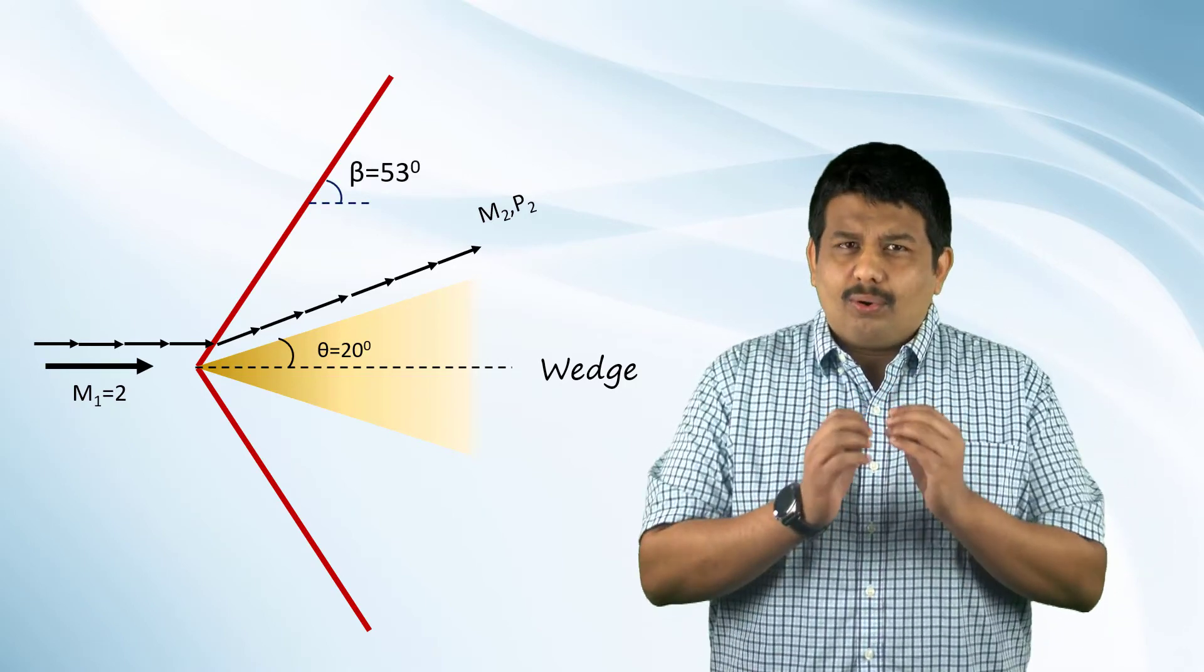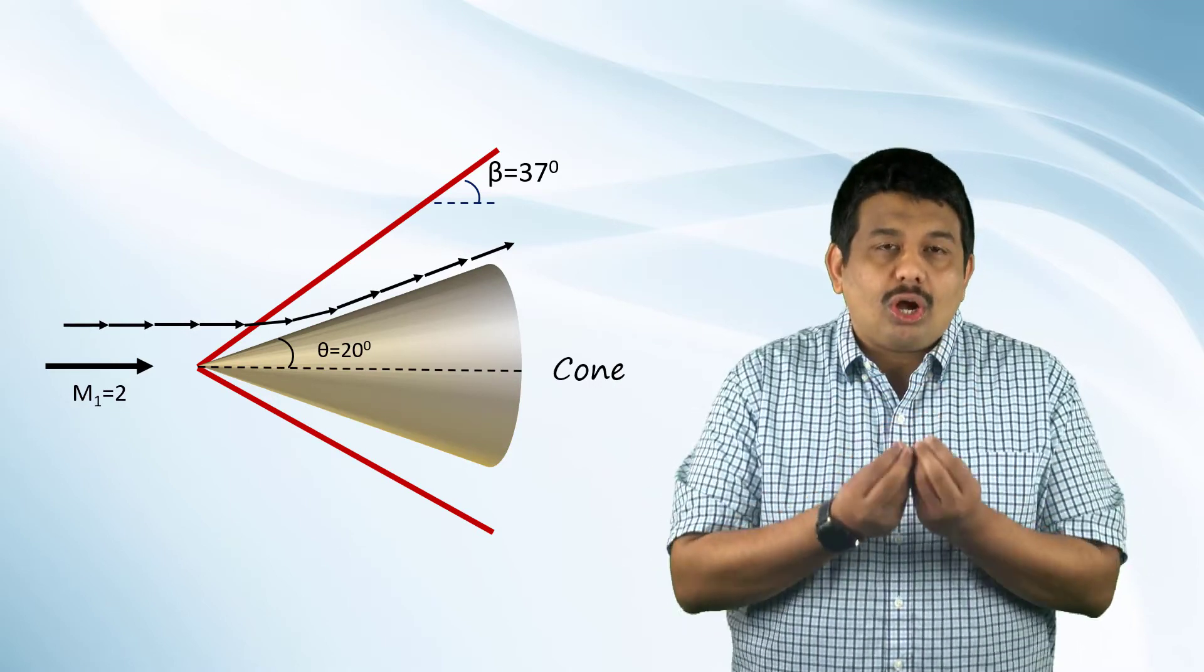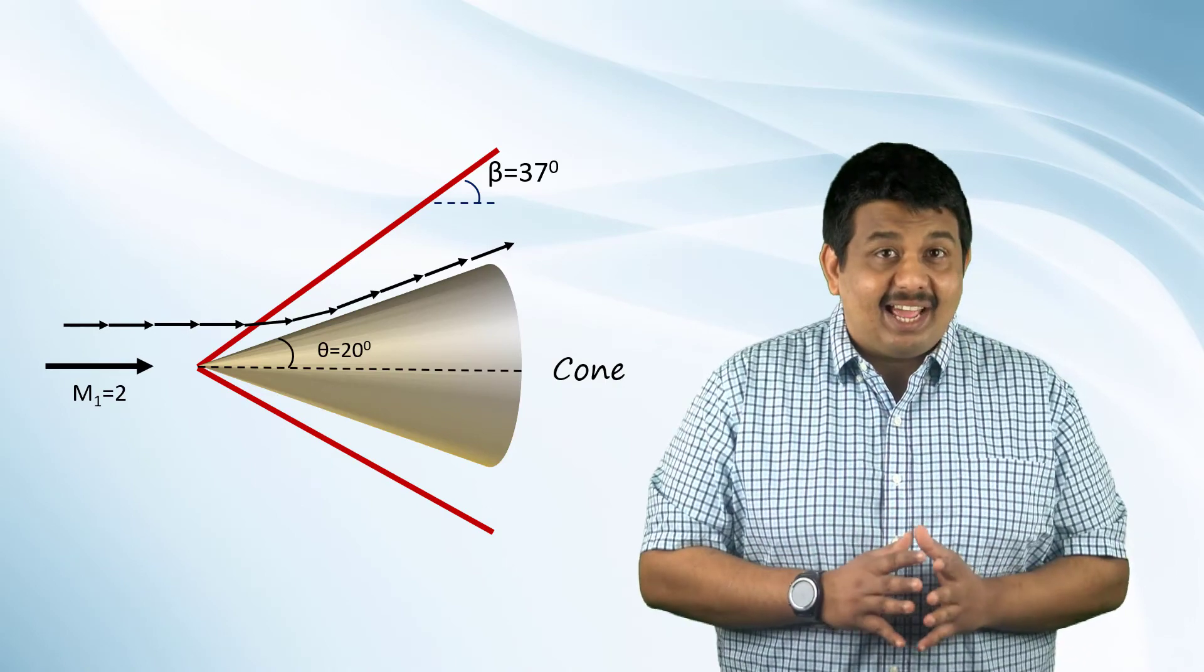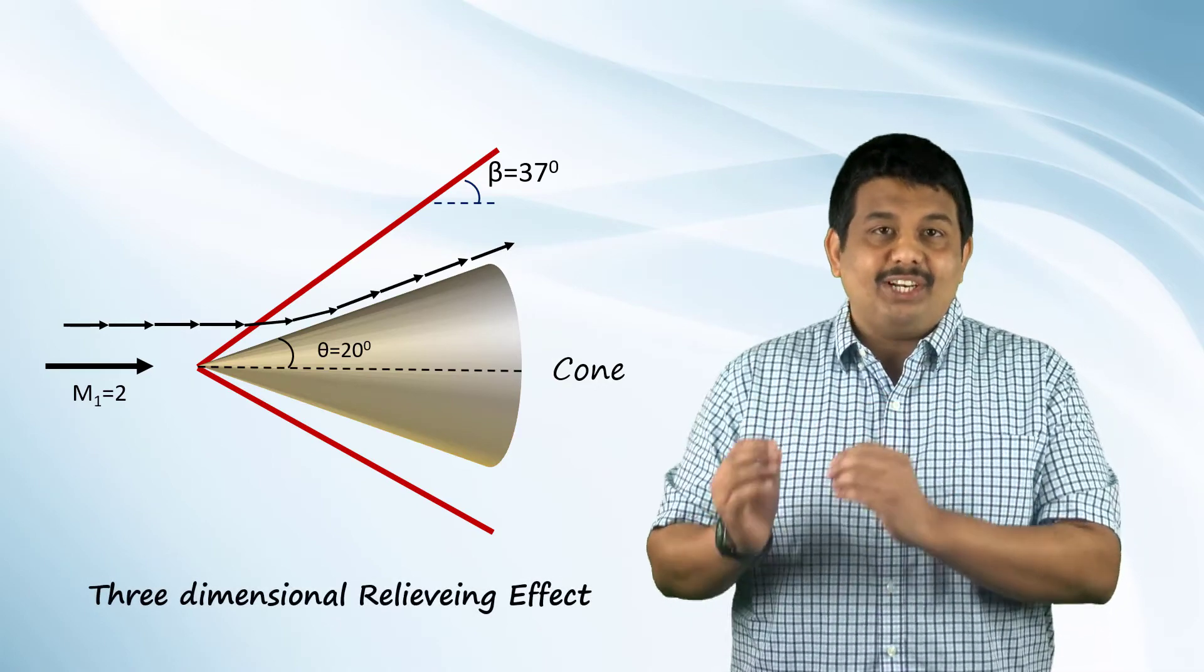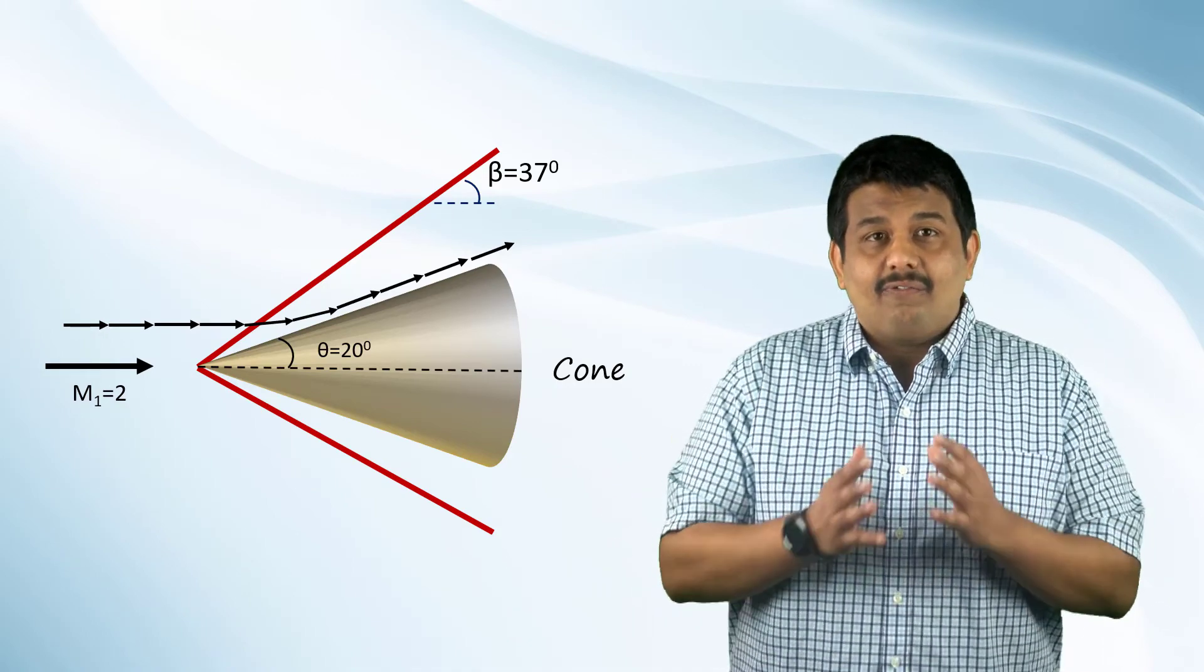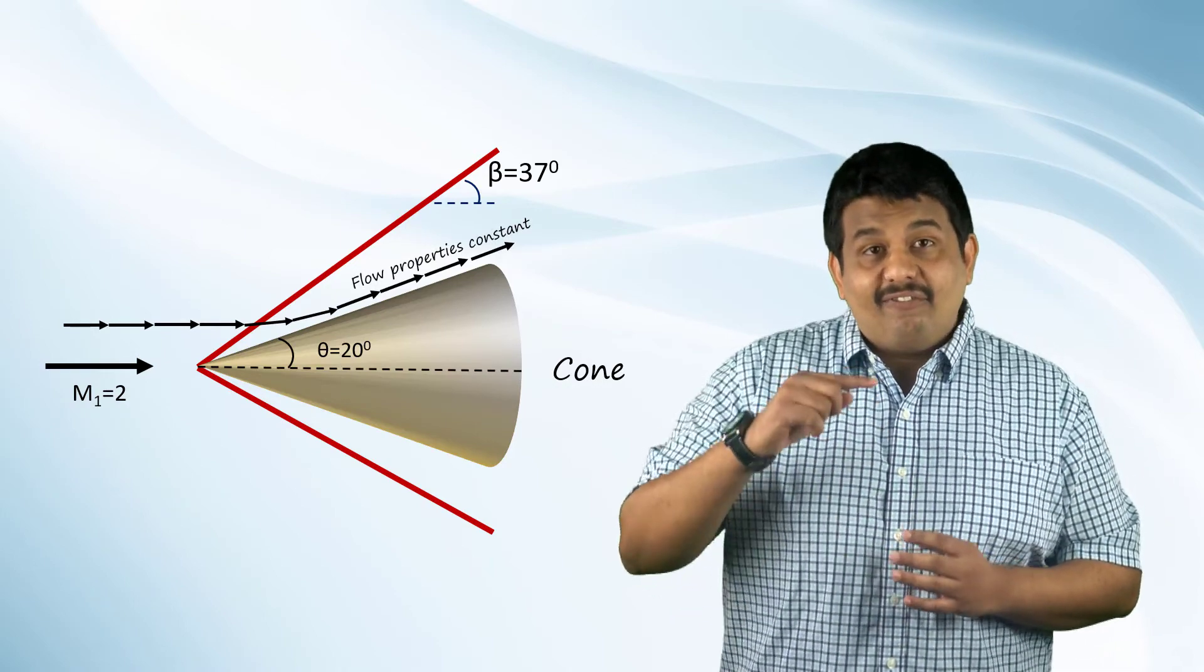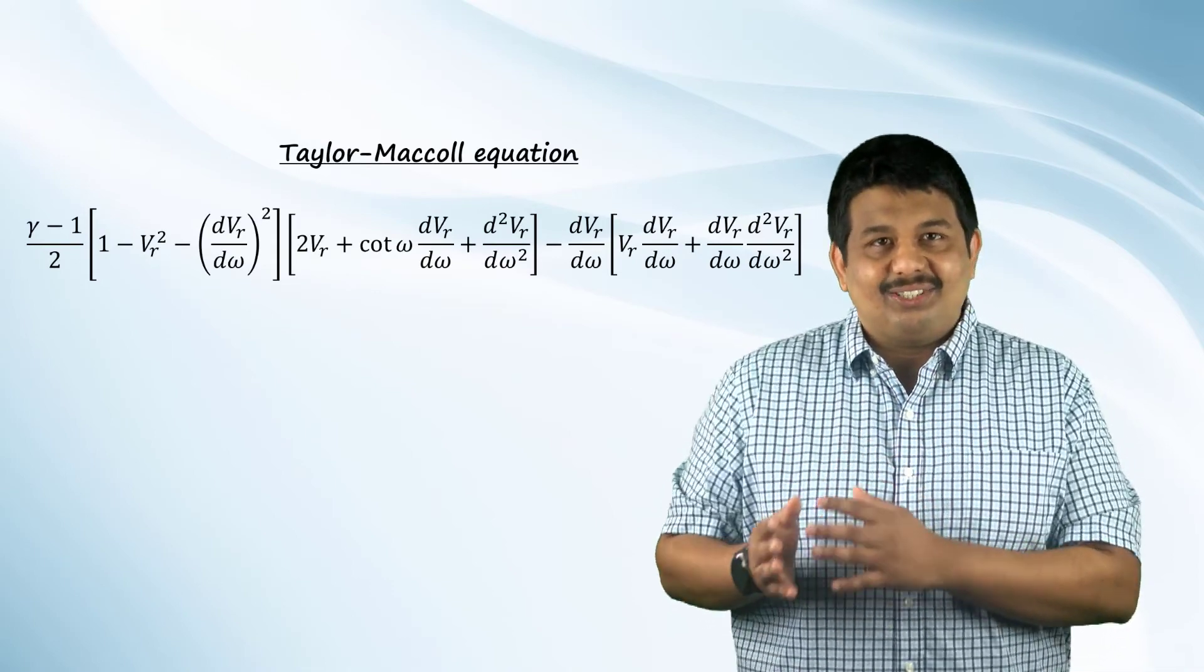Furthermore, for the same flow conditions and the deflection angle, the shock angle for a cone is lesser than that of the wedge, i.e., the shock is weaker for the cone. This is because the flow is 3-dimensional and can move in any direction to avoid being obstructed by the body. This phenomenon is generally referred to as the 3-dimensional relieving effect. A cone can be simply considered as a ray originating from the vertex of the cone. The flow properties can be assumed to be constant along each ray and vary only between the different rays. Flows that satisfy this assumption are called conical flows. The ordinary differential equation shown here is called the Taylor-McCaul equation and is used for finding the solution for conical flows.